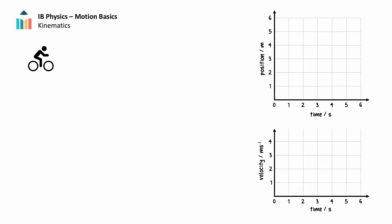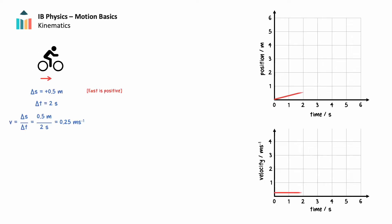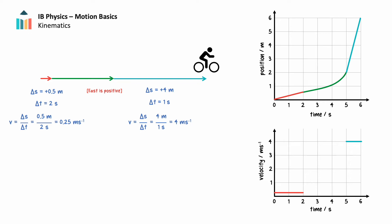Thus far, we've explored objects that have constant speed or velocity when in motion and that instantaneously change speed or direction. Now let's turn to what happens when the velocity of an object changes over time as it's moving — this is called acceleration. Imagine a cyclist moving east, a positive direction, first slowly at a constant velocity, then increasing its velocity over time until they move with a greater constant velocity. When the cyclist has a constant velocity, their motion on the position-time graph is a straight sloping line. On a velocity-time graph, constant velocity is shown as a horizontal line. When the cyclist is accelerating, their motion on a position-time graph is a curved line curving upward, and on the velocity-time graph, constant acceleration is shown as a straight sloping line.